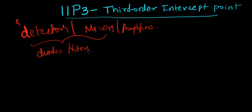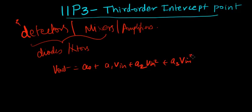Because they have non-linear components that are being used, their output is given by the Taylor series expansion: A0 plus A1·Vin plus A2·Vin² plus A3·Vin³ plus A4·Vin⁴. It continues like that.